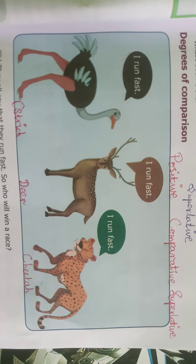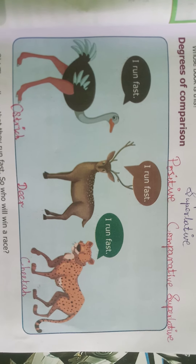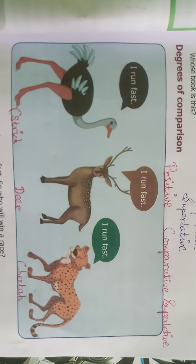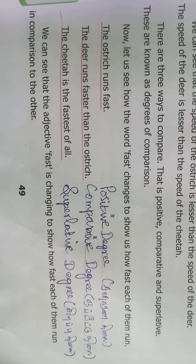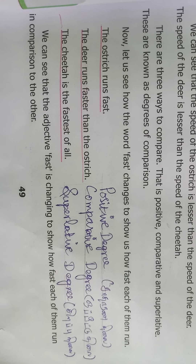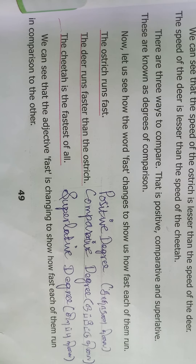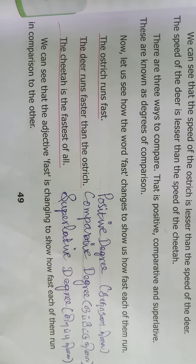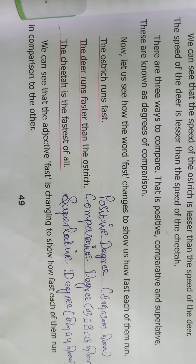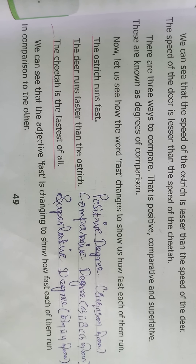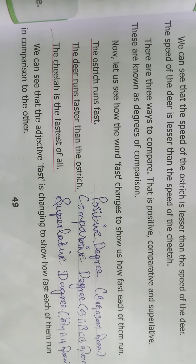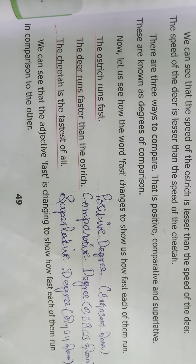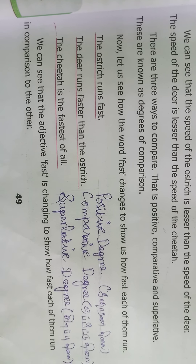We are going to compare the speed of ostrich, deer and cheetah. First one: positive degree. Positive degree is used to refer to one object, person or place without making any comparison. For example, 'the ostrich runs fast.' There is no comparison in this sentence, so this is positive degree.